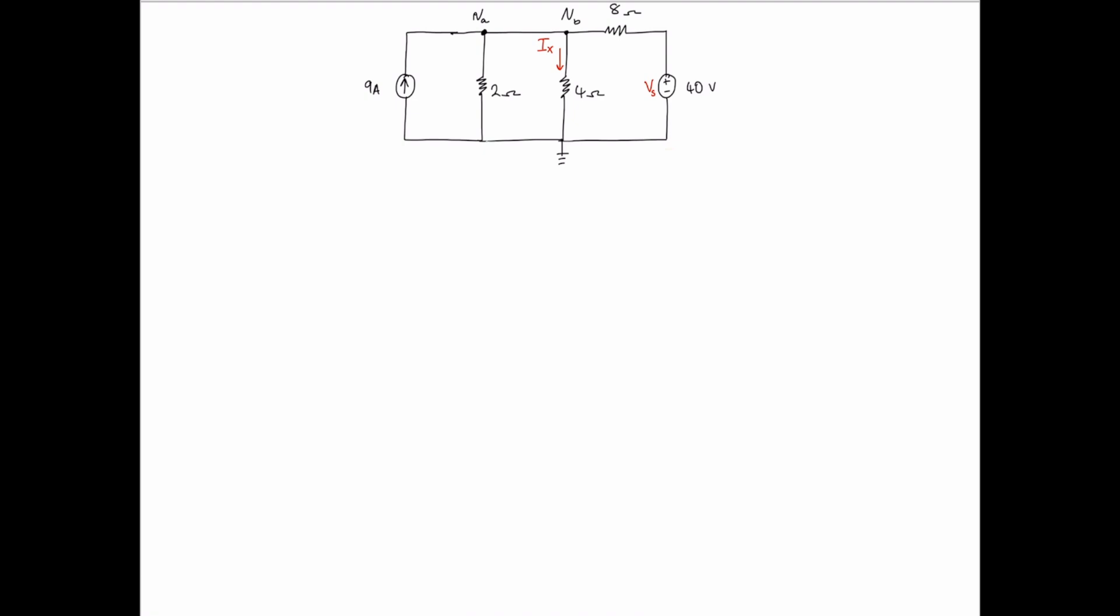the branch connecting both of those has no component to cause a voltage drop. Thus, the voltage at VA is going to equal the voltage at VB.